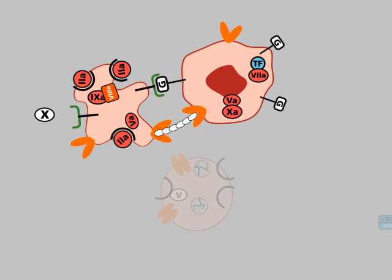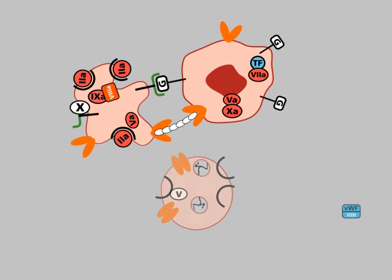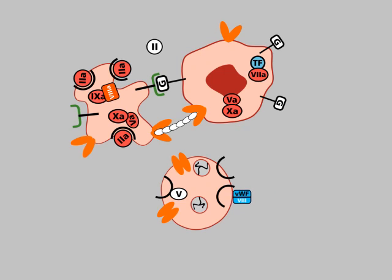In association with factor IXa, factor VIIIa activates factor X, which binds to factor Va on the platelet surface, again in association with phospholipids. Activated factor X converts prothrombin, indicated as factor II, into thrombin, indicated as factor IIa.